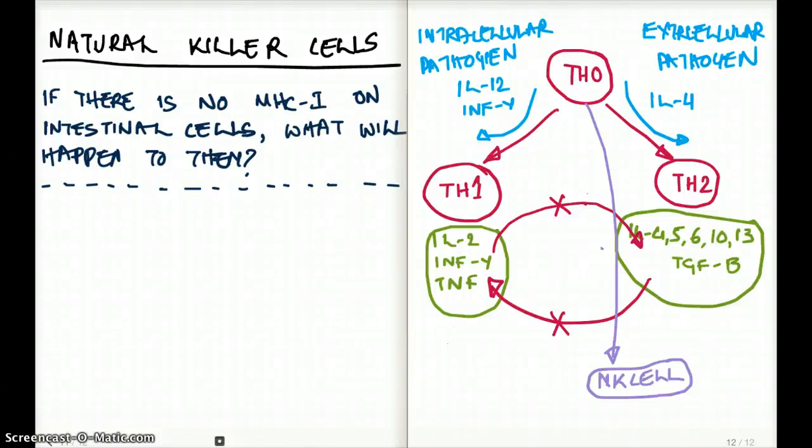This video talks about natural killer cells with an example and how it is derived from the naive T cells. Now the question says, if there is no MHC class 1 on intestinal cells, what will happen to them?